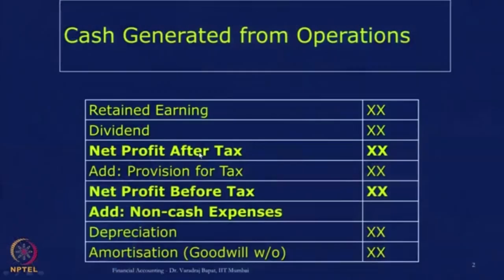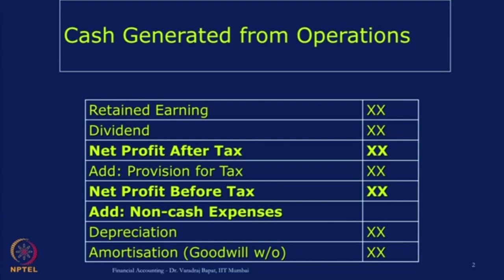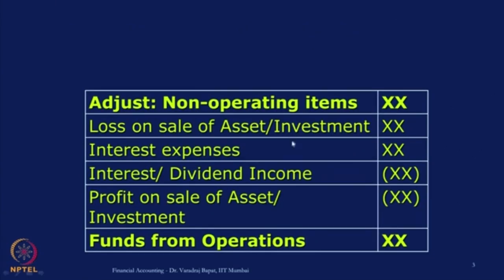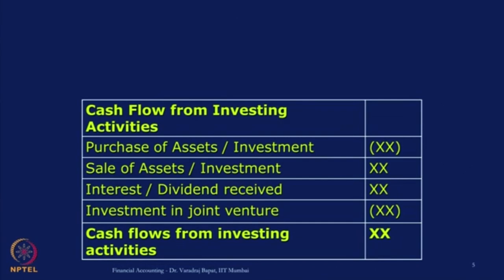So we start with profit, then add back non-cash items or non-operating items, and we make adjustments for some items which need to be deducted. In short, depreciation should be added, or items like loss or interest expenses are added, while items like interest income or profit on sale of investments are reduced. That gives you funds from operations. Then we also have to make adjustment for working capital items and for income tax — that gives you cash flow from operating activities.